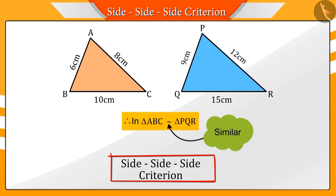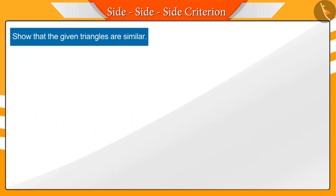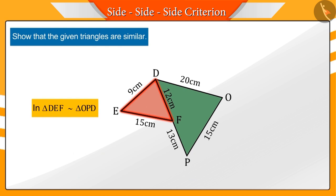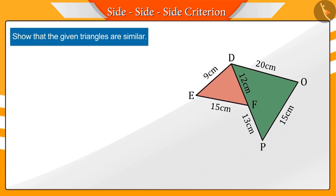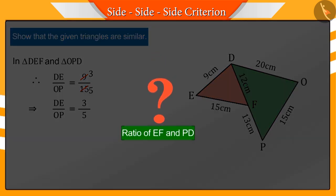Let's look at another example. Show that the triangles DEF and OPD are similar in the given figure. What can you say by looking at the figure? We can see that the ratio of the corresponding sides DE and OP in these two triangles comes out to be 3 by 5. Now, can you tell the ratio of the sides EF and PD?